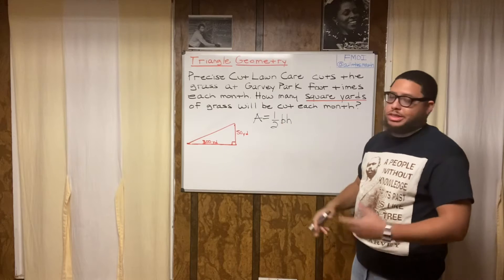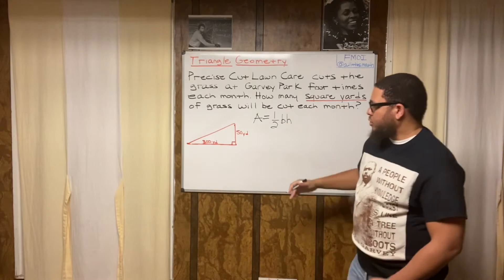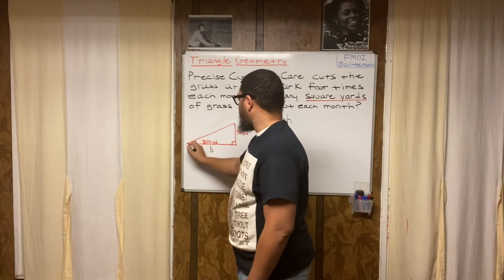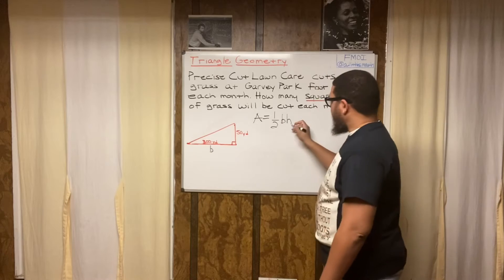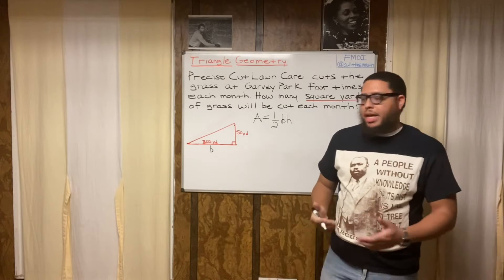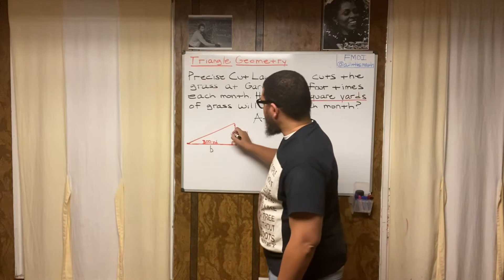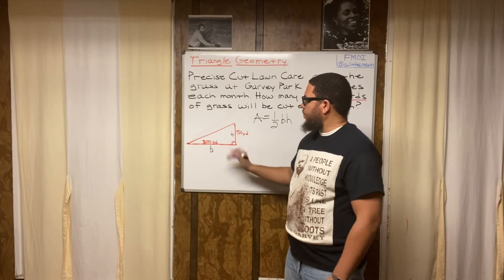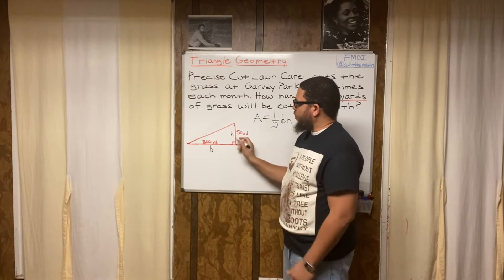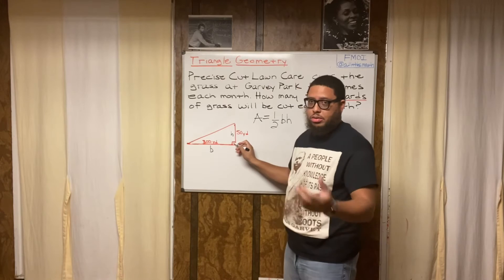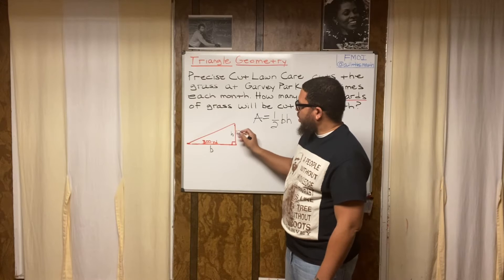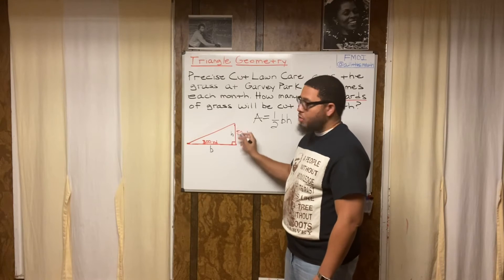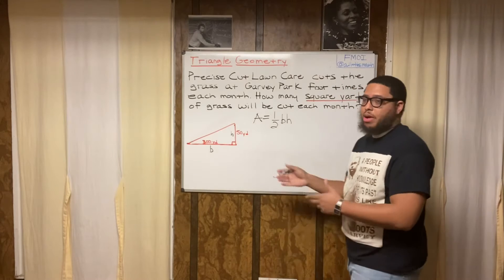B is the base of the triangle — the horizontal dimension. In this case, the base is 300 yards. H is the height — basically how tall the triangle is — the vertical dimension, never the slanted dimension. The way I know this is vertical is because there's a 90-degree angle, a right angle. In order for this to be a 90-degree angle, it must intersect with a horizontal line. Since that's the base, this must be a vertical height.